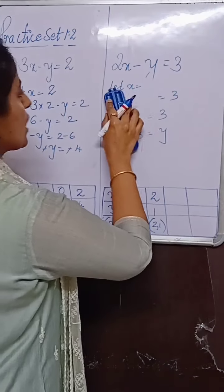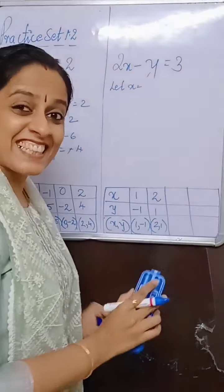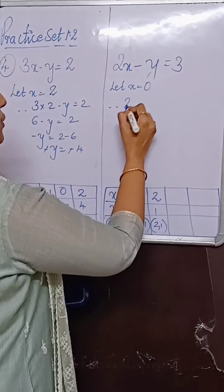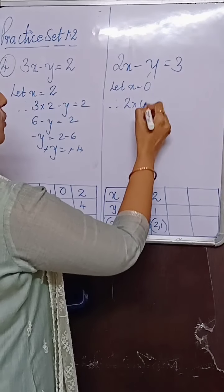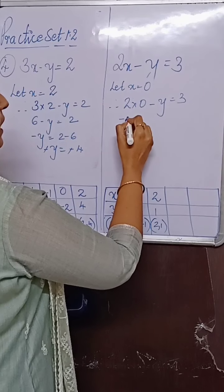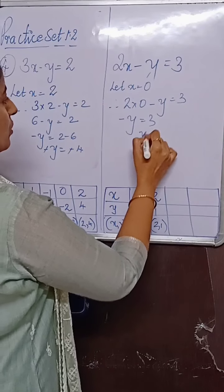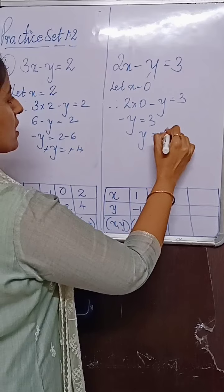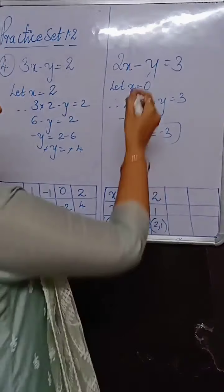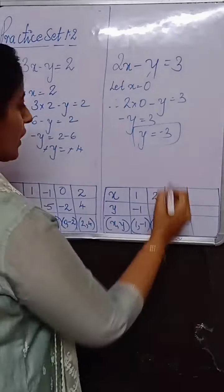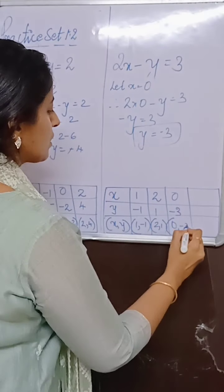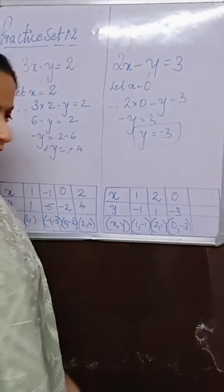Now my favorite number — I will take x as 0. So 2 into 0 minus y equals 3, giving minus y equals 3, therefore y equals minus 3. When x is 0, y is minus 3. Ordered pair: 0 comma minus 3.